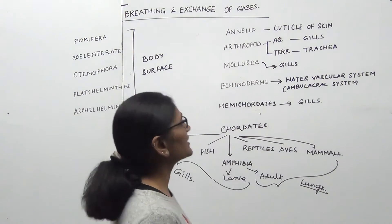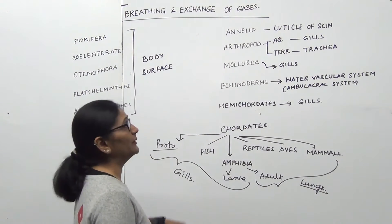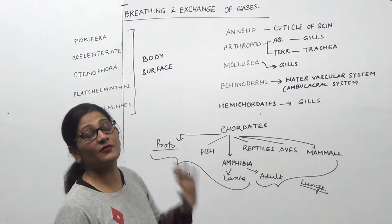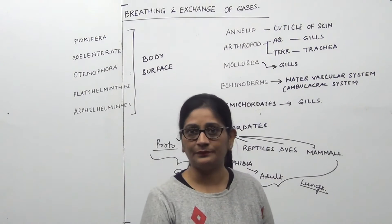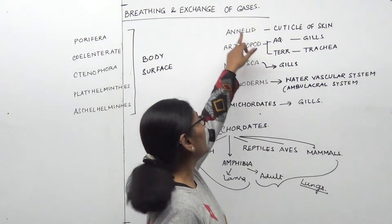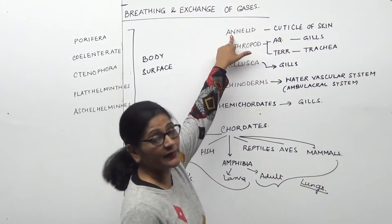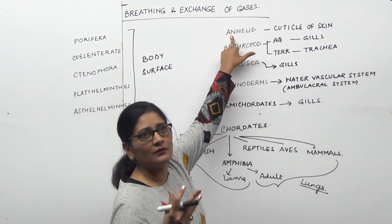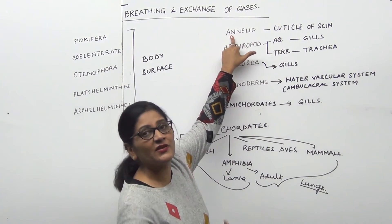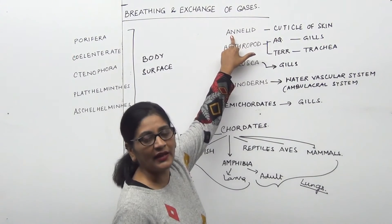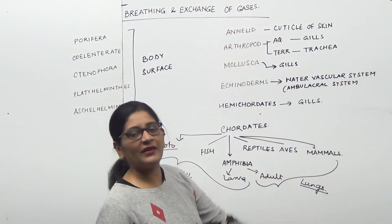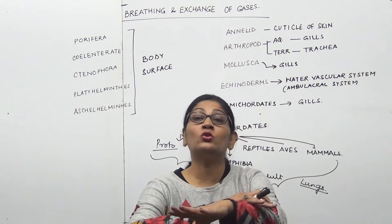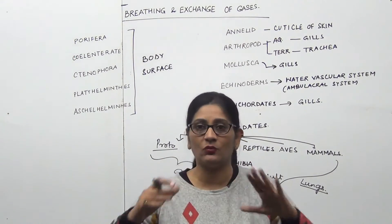Annelida was the first phylum in which an organ system level of organization appeared. But even in Annelida, there is no well-defined respiratory organ. They also respire through the body surface — through the cuticle of the skin.